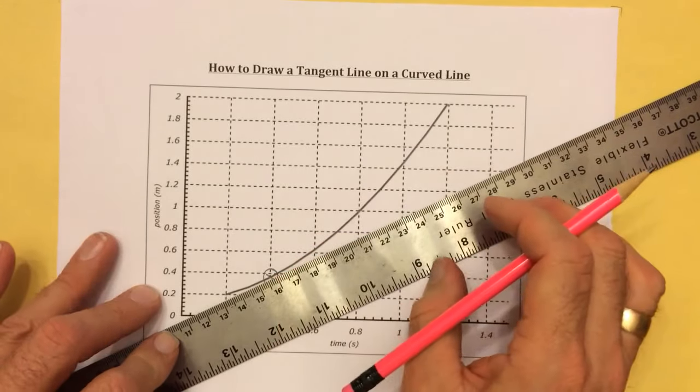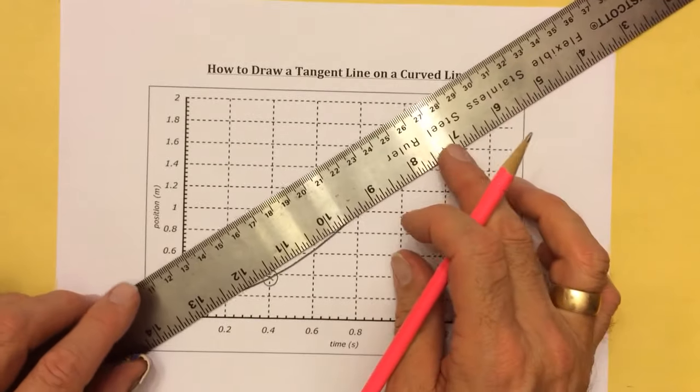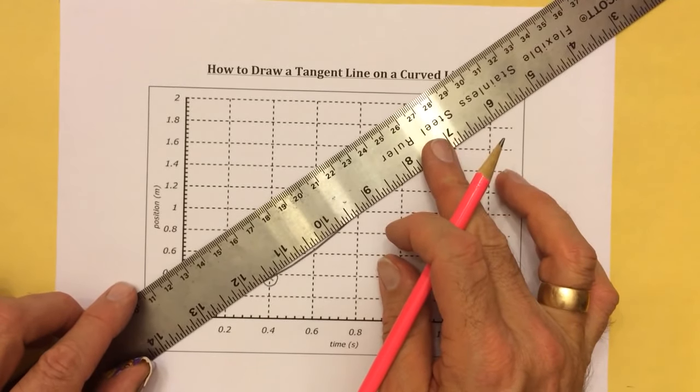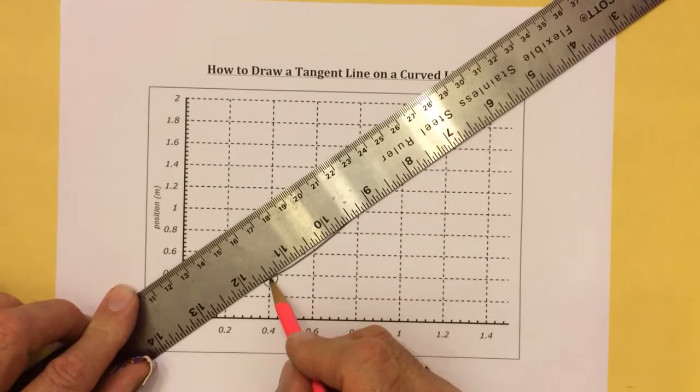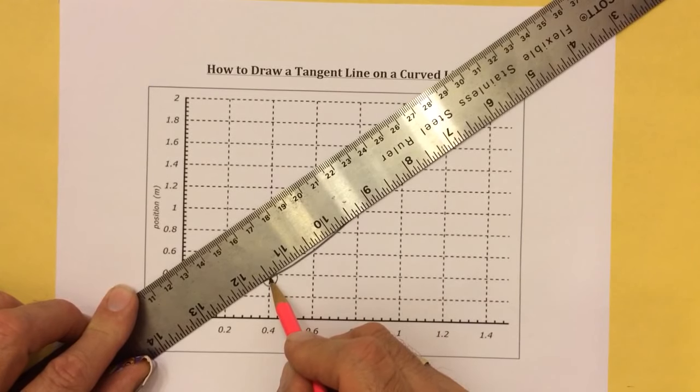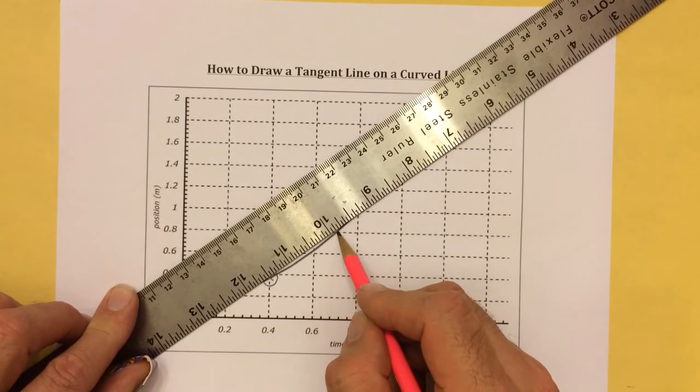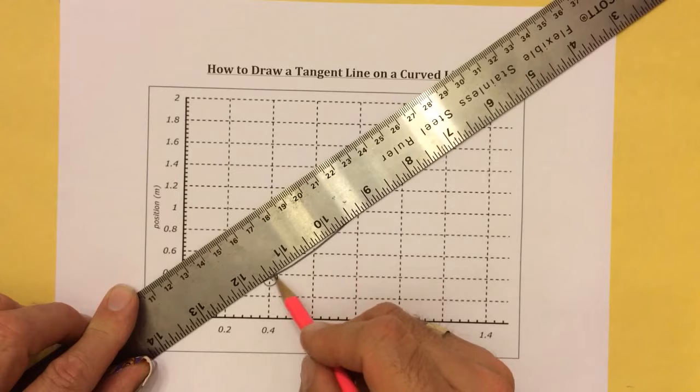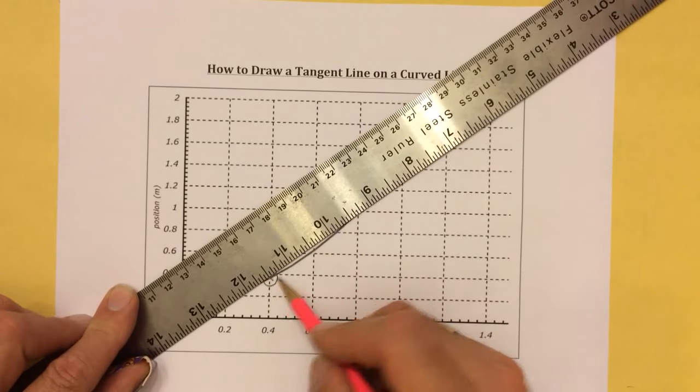Now, in contrast, let me show what's not a tangent line. If I draw a line like this, you see that this line would touch the point of interest plus it would touch another part of the curve. So that's called a chord. We're not interested in doing a chord. We want a tangent line.